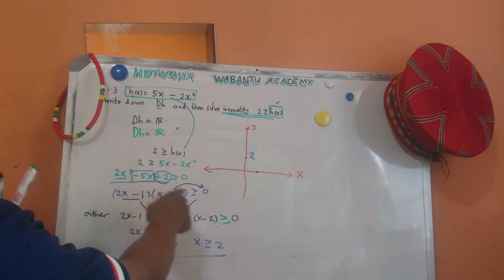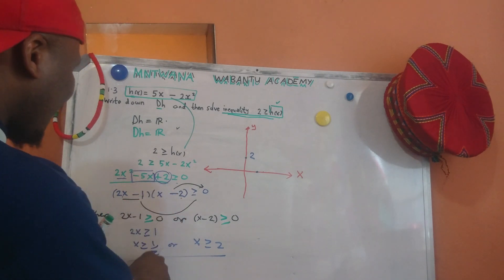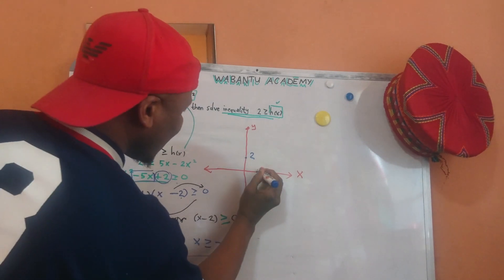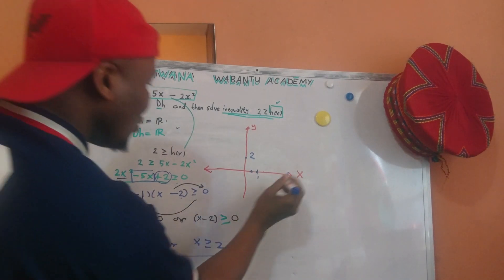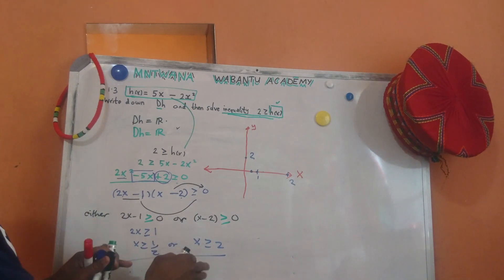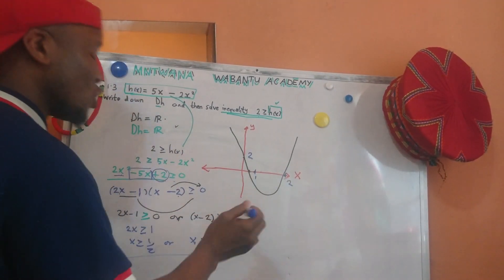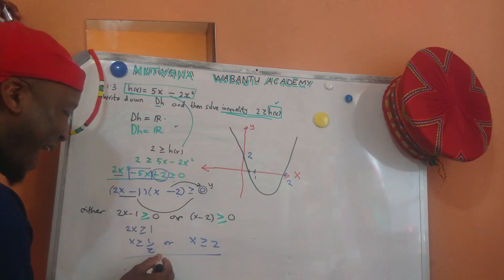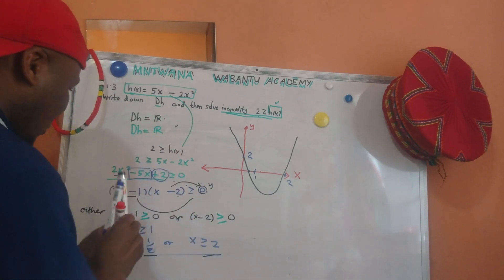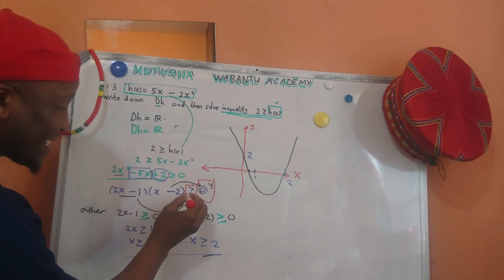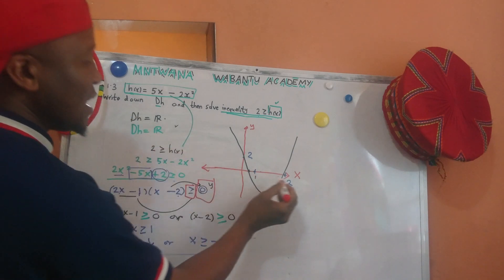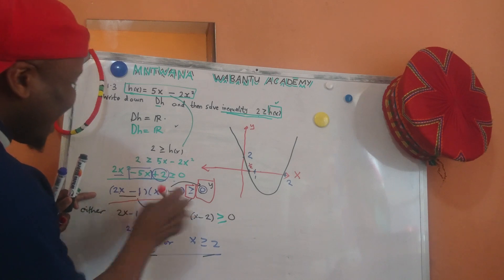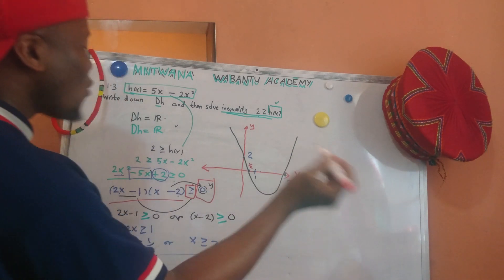Let's check the factorization: 2 times negative 5 gives negative 10, and negative 5 — yes, that's true. So the x-intercepts are x equals one half and x equals two. Let's say one half is somewhere on the number line here and two is somewhere here. Now let's draw the graph. Since we're treating this as equal to zero, these are the x-intercepts — where the graph crosses the X axis.